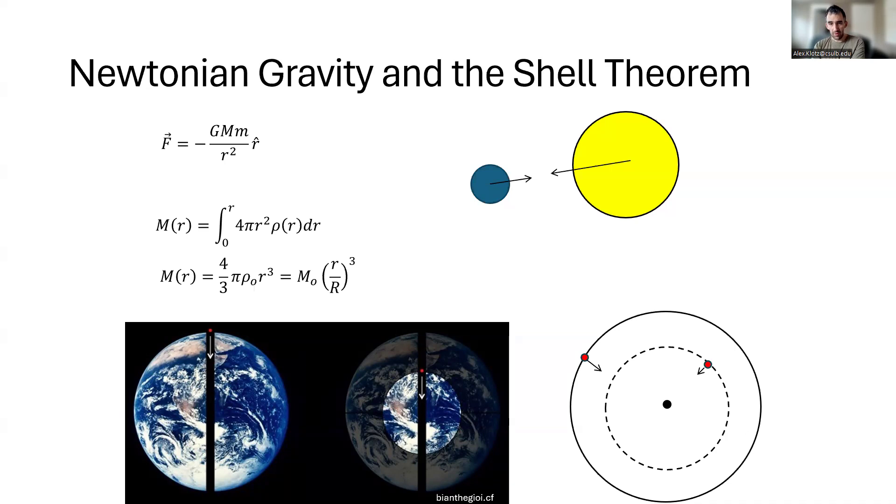If we are within a uniform sphere, then we have the shell theorem, which says that if we draw a radius around our position centered on the center of the object, the gravitational field we experience is only due to the mass below us or at a smaller radius, and the mass above us or outside the sphere that we're in cancels out. So if the density is uniform, then mass is just proportional to volume. Volume is proportional to the cube of radius, which means the mass that gravitates is proportional to the cube of our radial position.